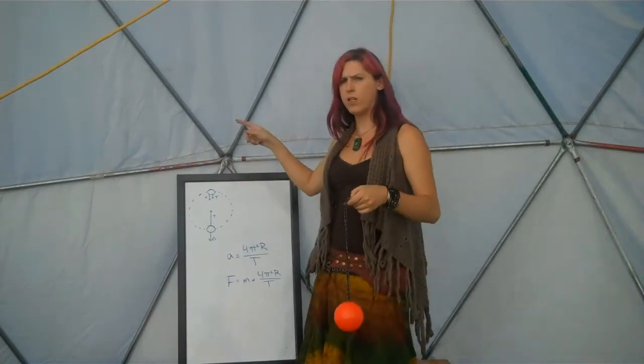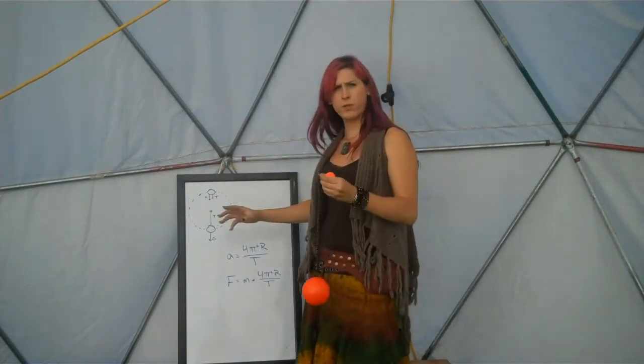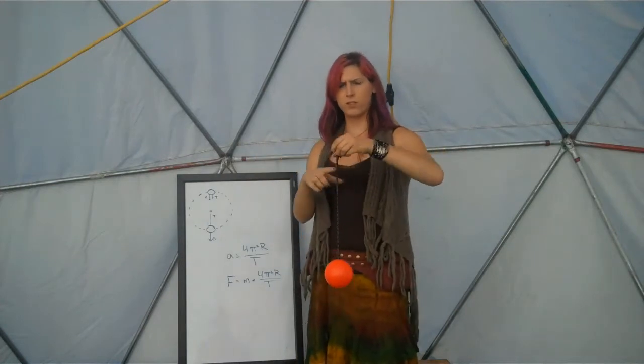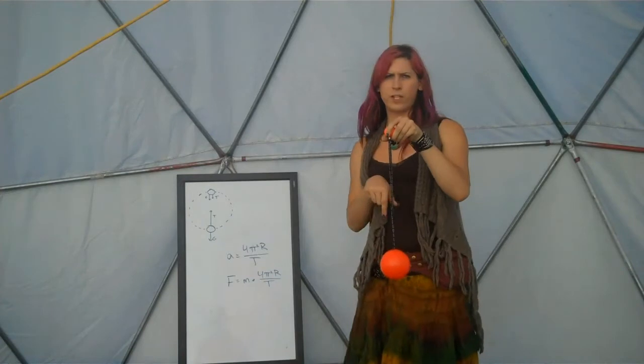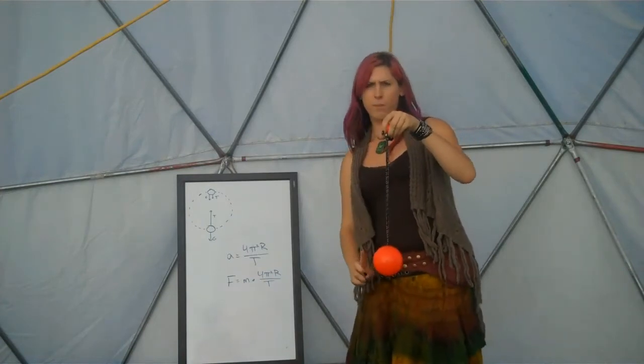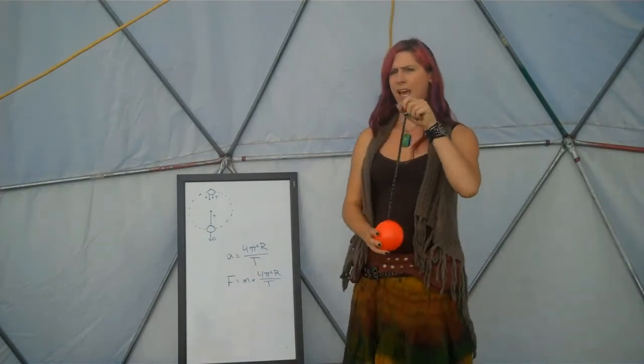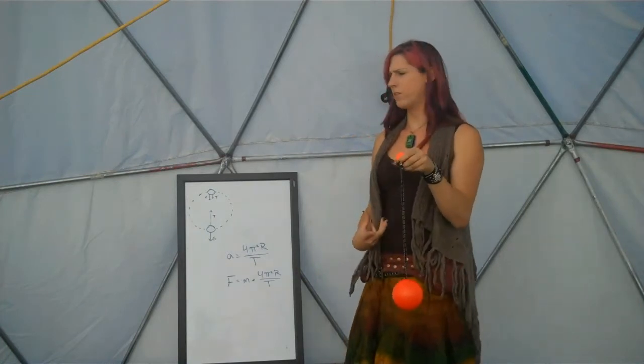At the bottom of the circle, because we always have to accelerate at the same rate towards the center of the circle, we have gravity pulling down on us, and then we have to fight gravity going down with extra tension pulling up, so the tension has to outweigh gravity to pull the poi around in the circle.